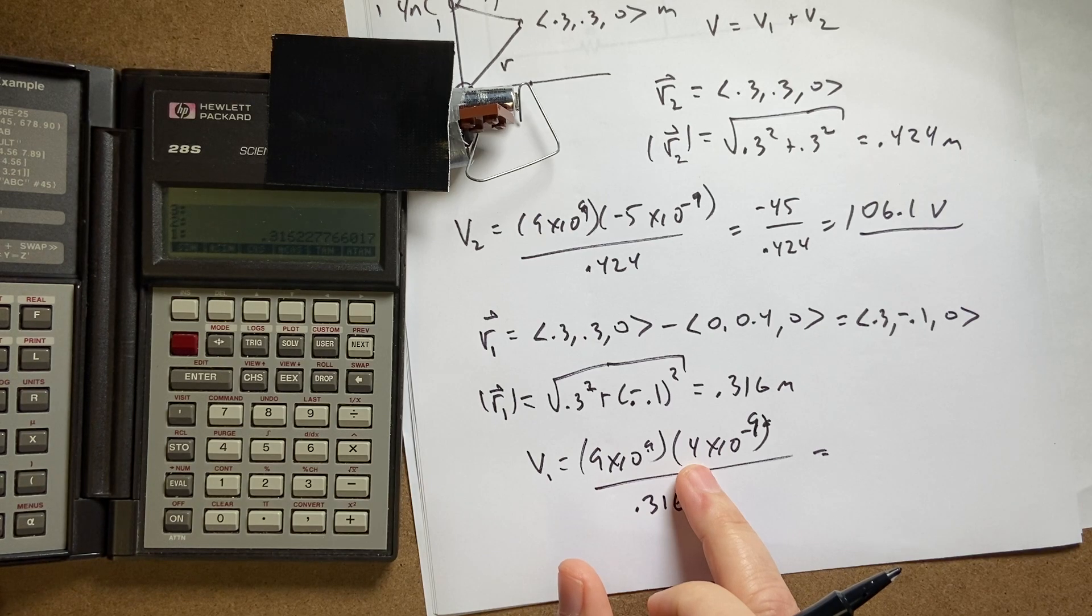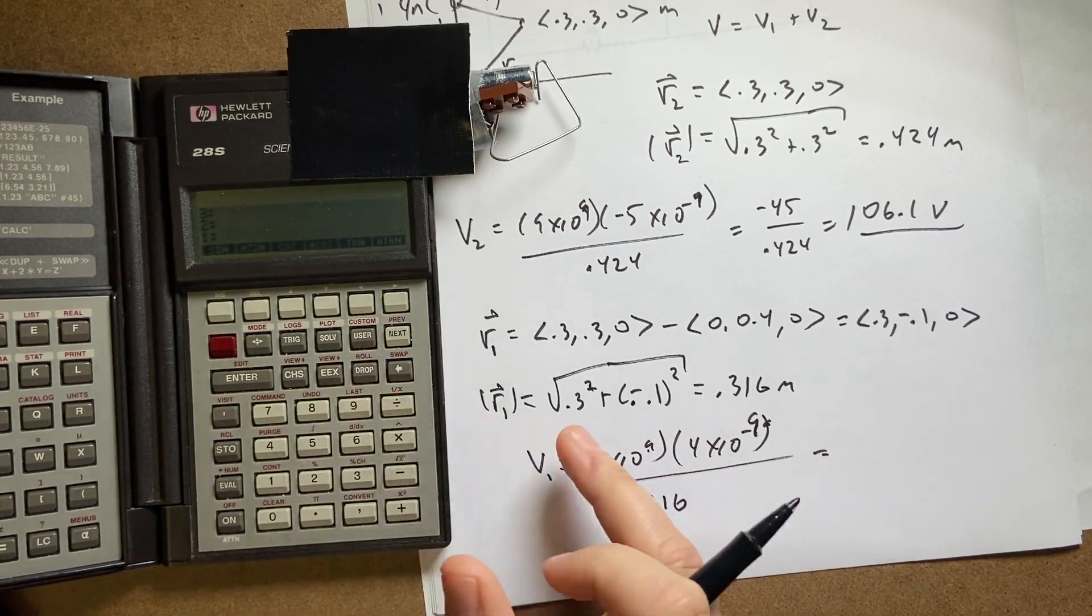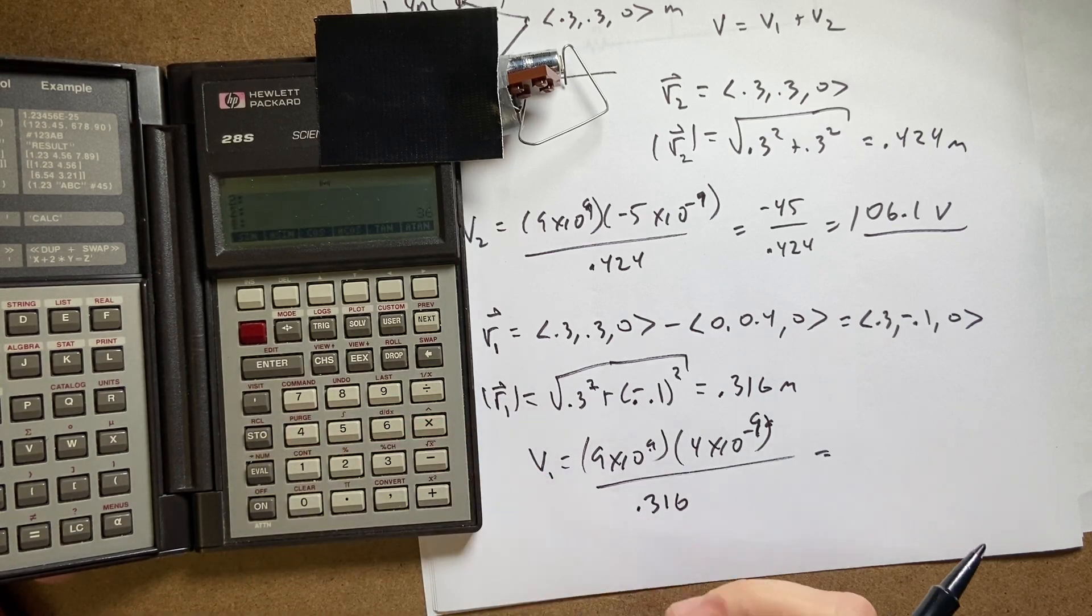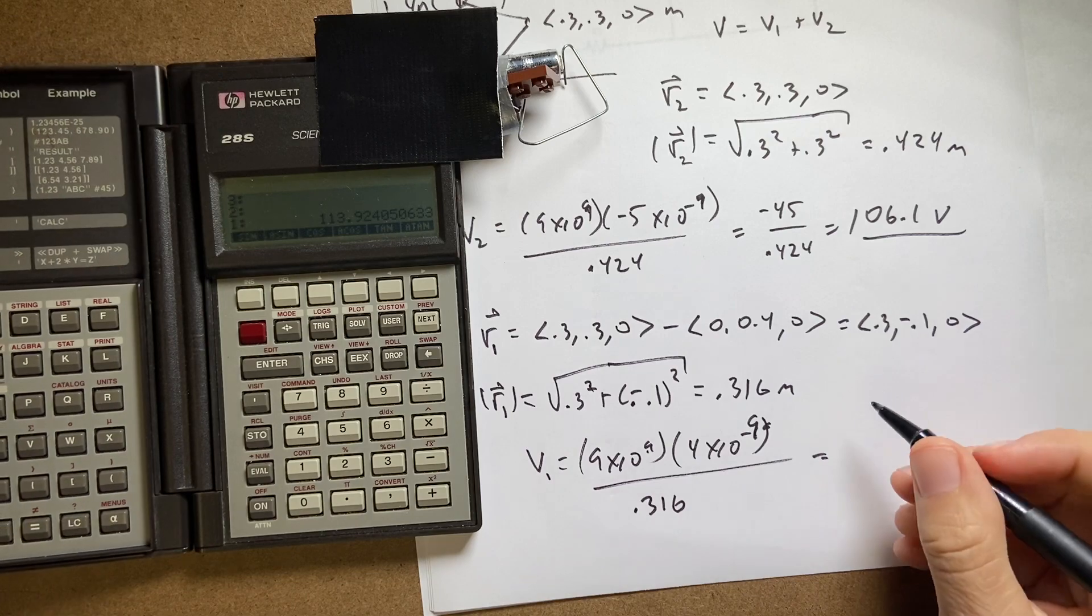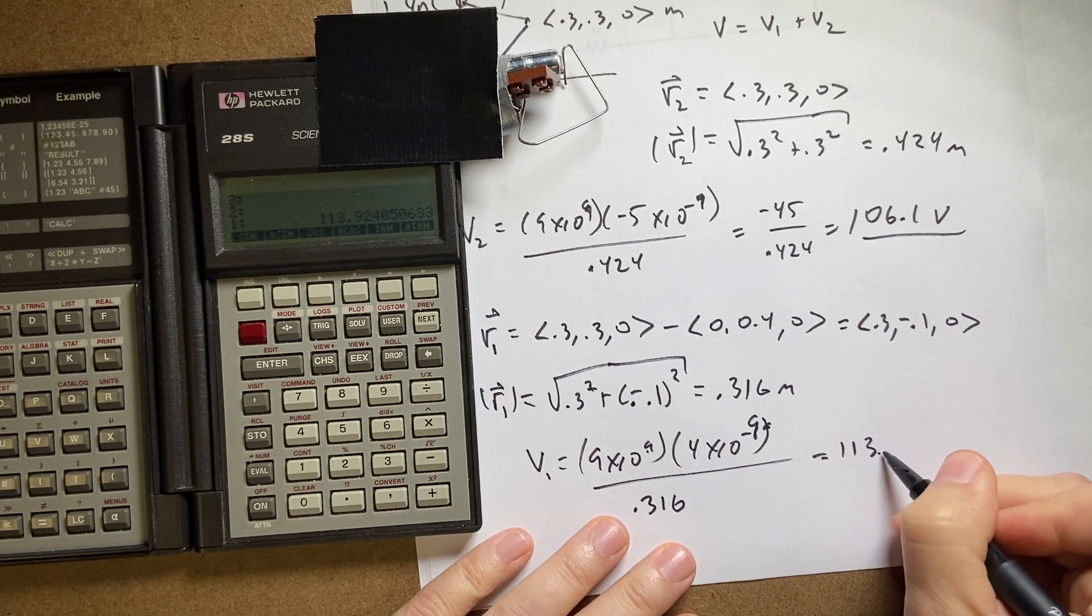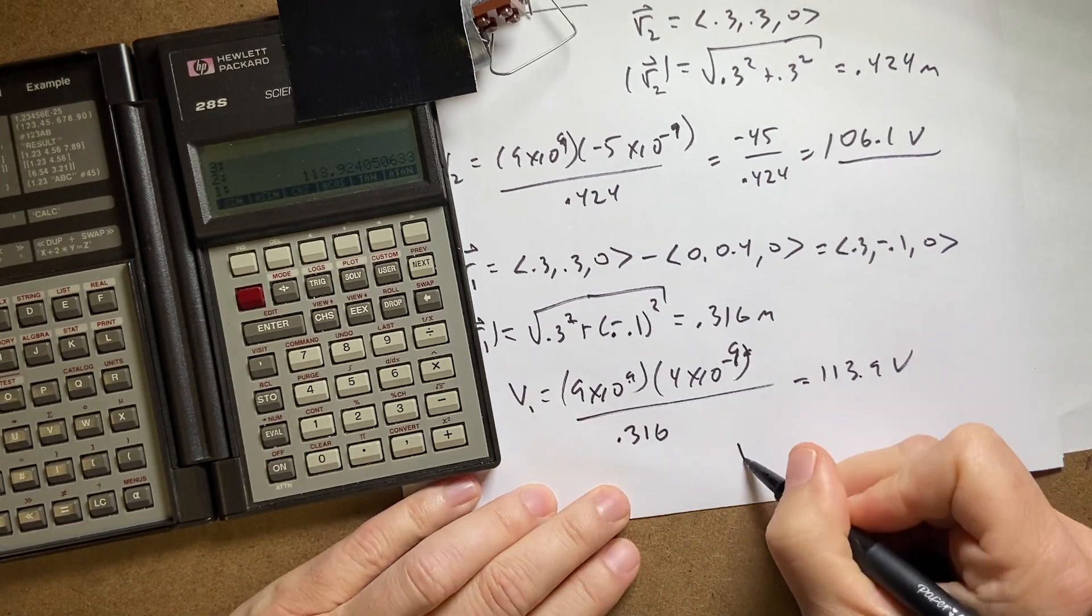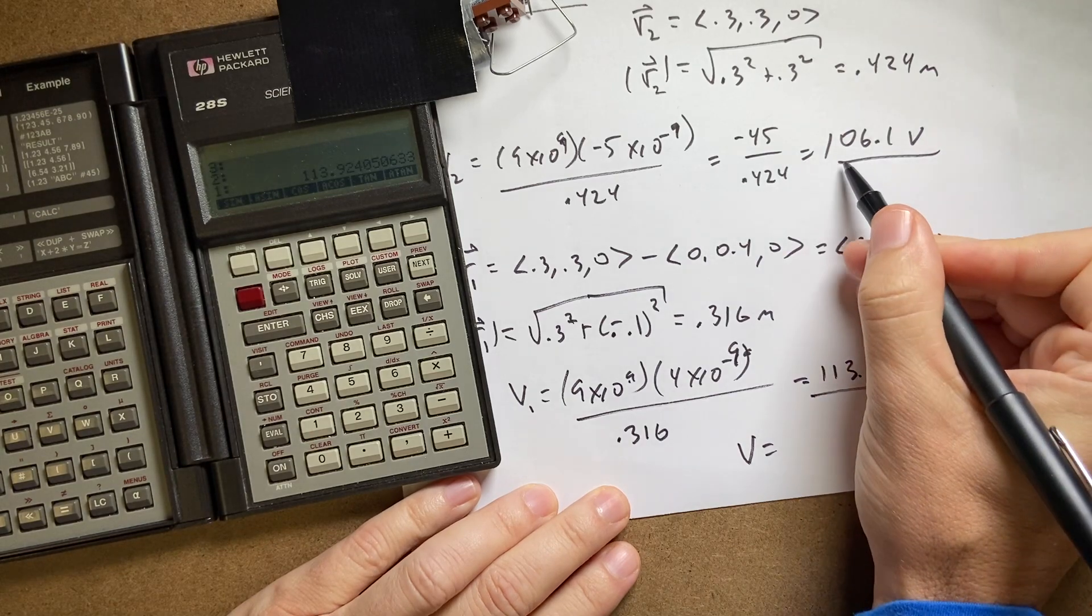So I get 9 times 4 which is 36. 9 enter 4 times, divide by 0.316, and I get 113.9 volts. So now the total is going to be this plus that.